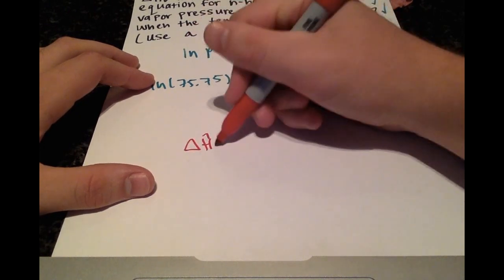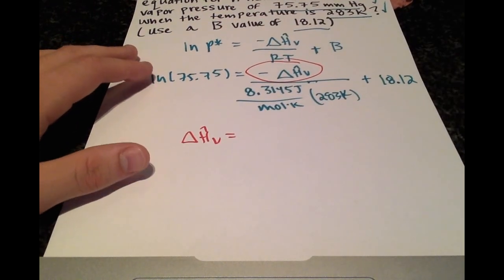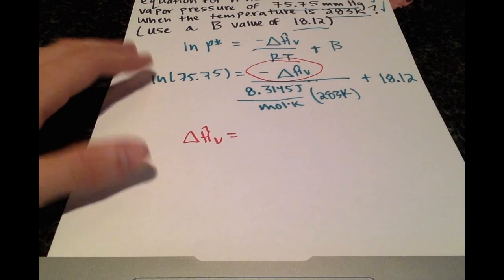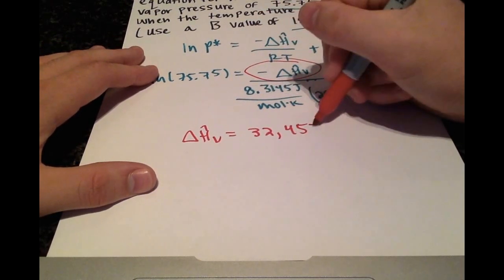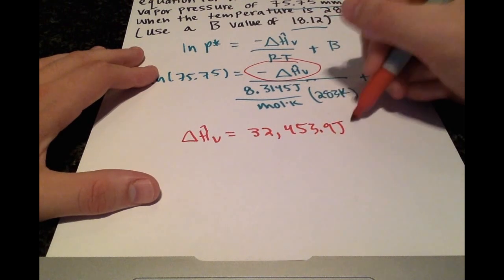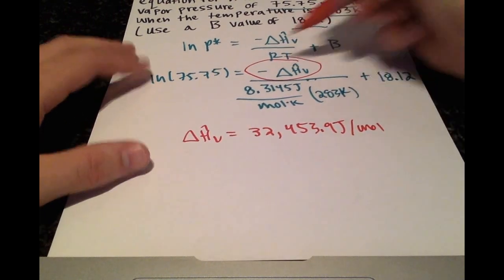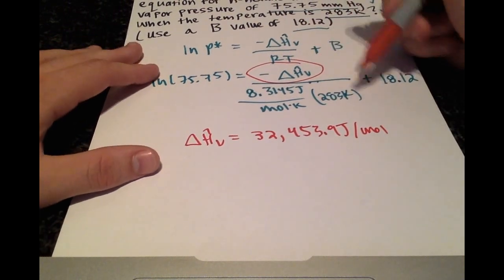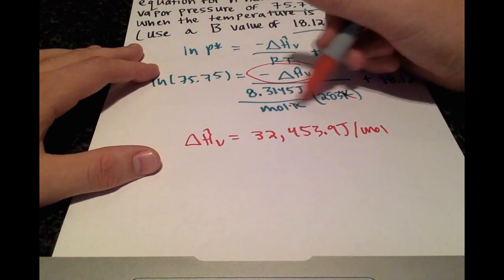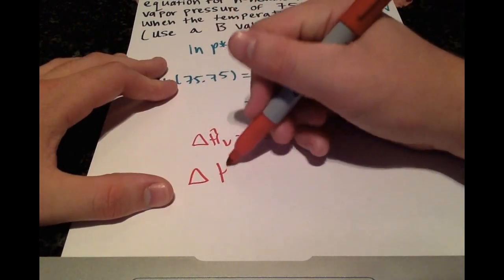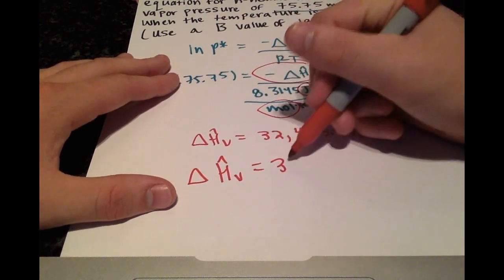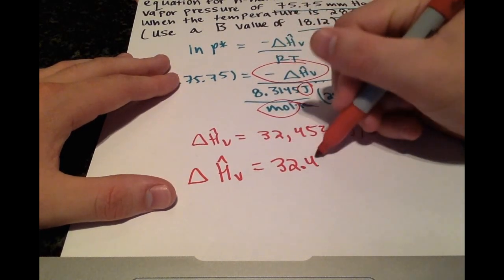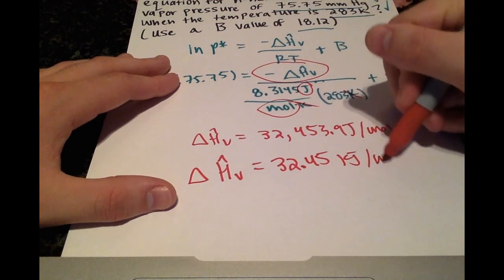I get that our latent heat of vaporization is 32,453.9 joules per mole, and this is where the units were really important. So the temperature had to be in Kelvin, so that canceled out. And if we write our latent heat of vaporization in kilojoules per mole, that's just 32.45 kilojoules per mole.